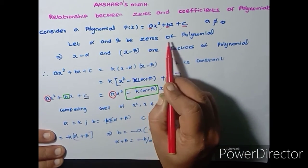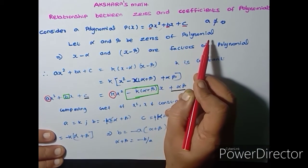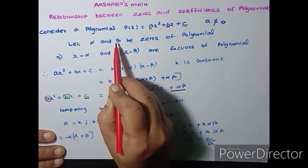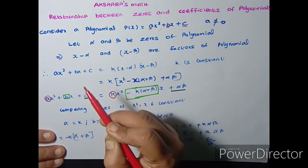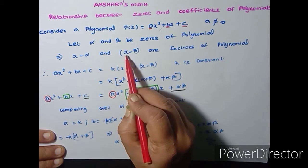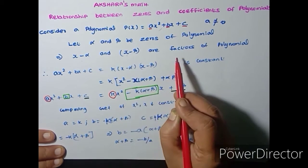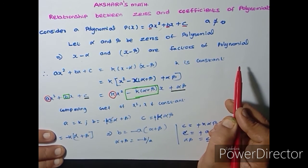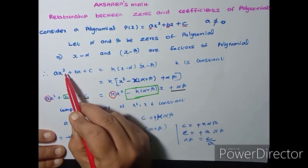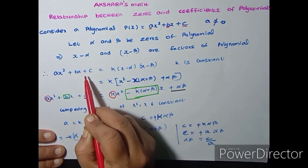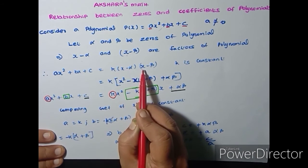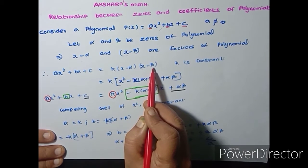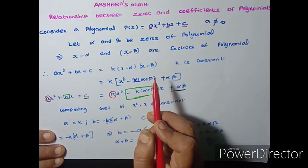Let alpha and beta be the zeros of the polynomial. Whenever alpha and beta are zeros of the polynomial, immediately X minus alpha and X minus beta are the factors of the polynomial. So, Ax² + Bx + C can be written as K times (X − alpha)(X − beta), where K is a constant.